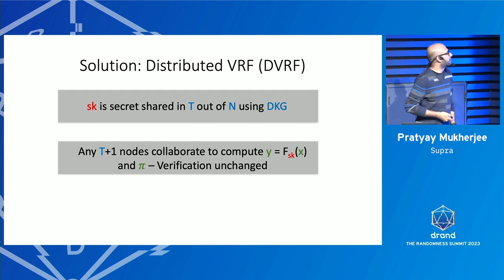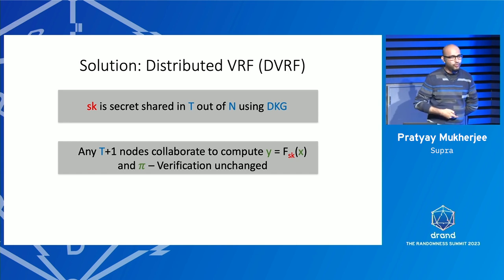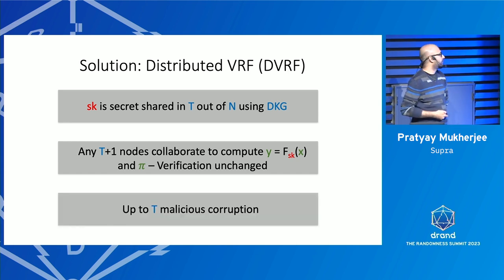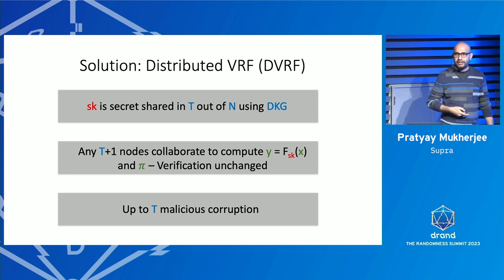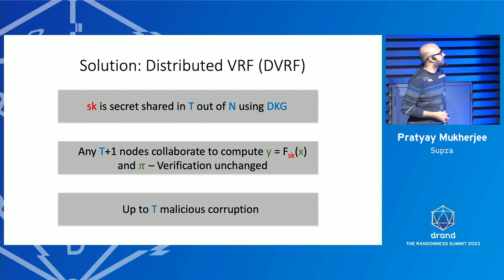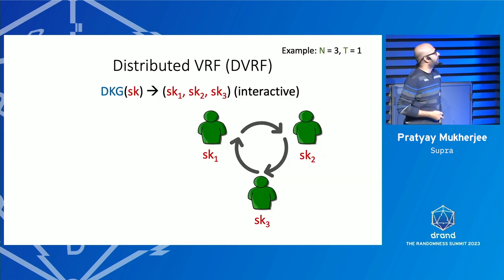Any T-plus-one nodes can collaborate to compute the output, and the system should tolerate up to T malicious corruptions. That's the standard setup.